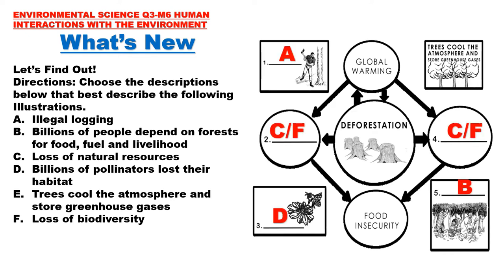Let us answer What's New. Number 1 depicts illegal logging, so the answer is Letter A. For numbers 2 and 4, we have a picture of a denuded forest. If there is deforestation, the effects would be Letter C, loss of natural resources, and Letter F, loss of biodiversity. Number 3: if we continue to destroy our environment, there would be billions of pollinators losing their habitat. And for number 5, the answer is Letter B — billions of people depend on forests for food, fuel, and livelihood.